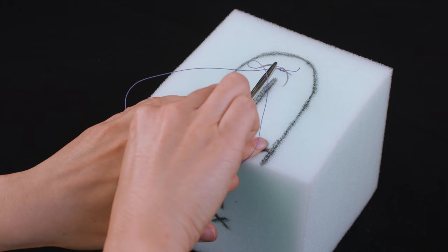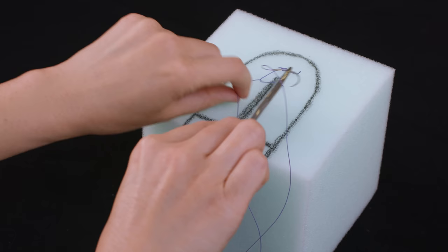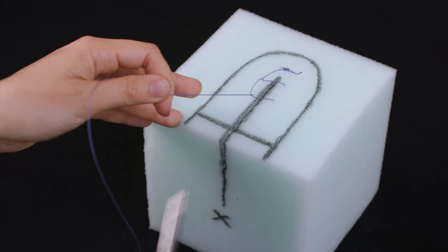Re-approximate the vaginal mucosa and underlying tissue by running the suture towards the exterior in a continuous fashion to the level of the hymen. I will do my running suture in a locking fashion, which helps prevent shortening of the vagina. Suture bites should be placed around one centimeter apart and half to one centimeter away from the edge of the tear.